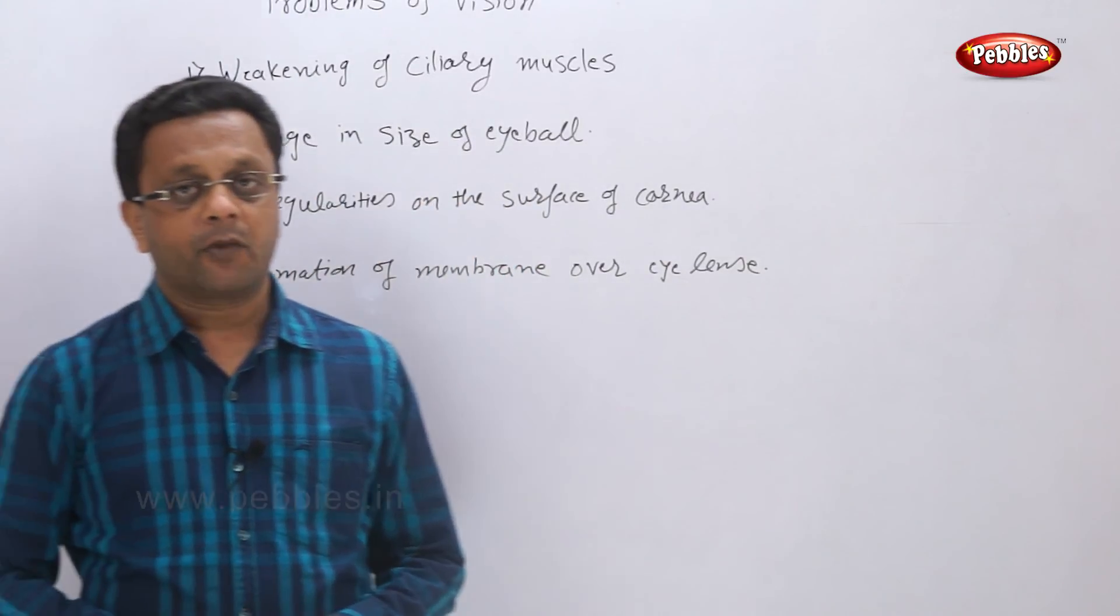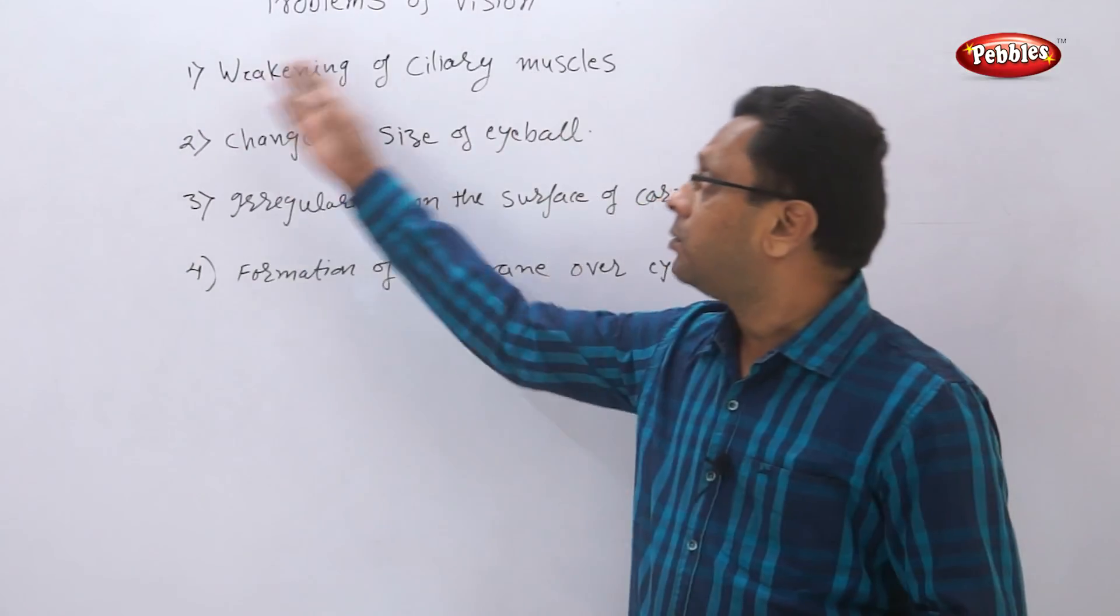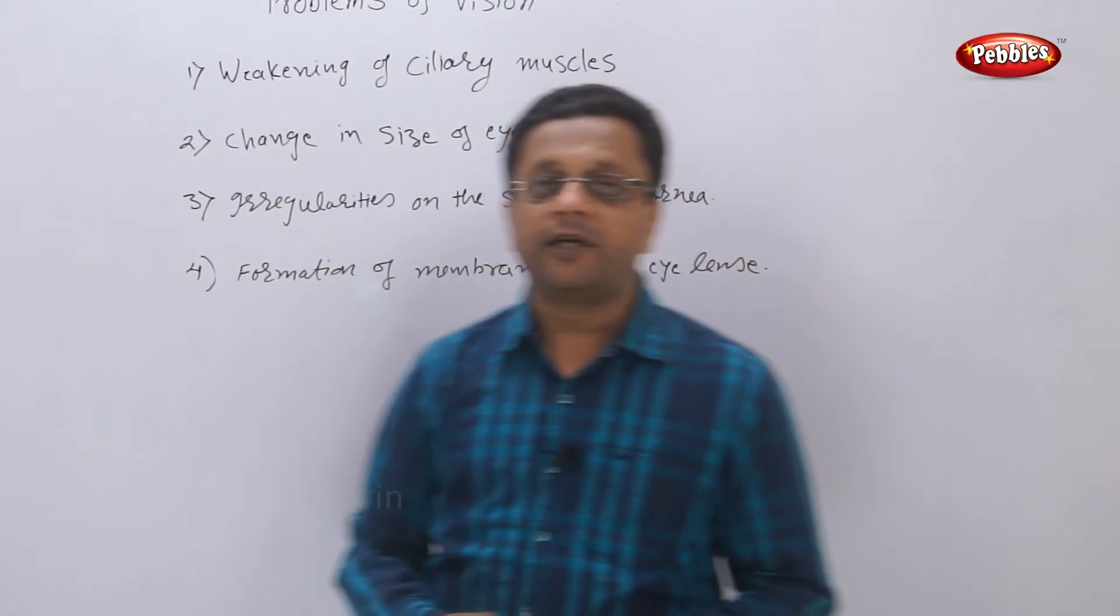So let us see what defects of vision can occur due to these problems. We are going to learn about three major defects.